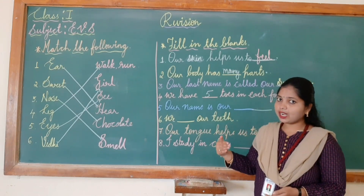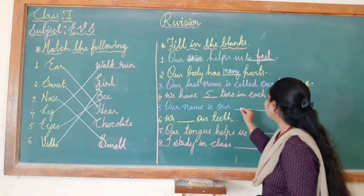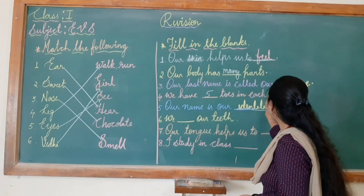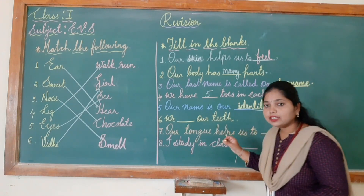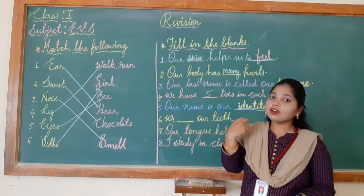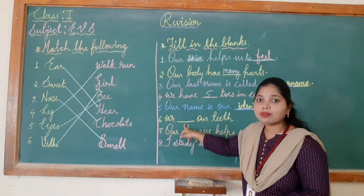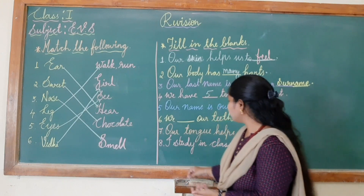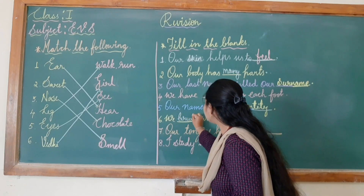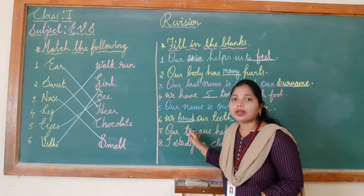Our last name is our surname. And our name is our identity. So what I should write? I will write 'identity', spelled I-T-E-N-T-I-T-Y. Our name is our identity. Next: we dash our teeth. We brush our teeth. So I will write 'brush' here. We brush our teeth.